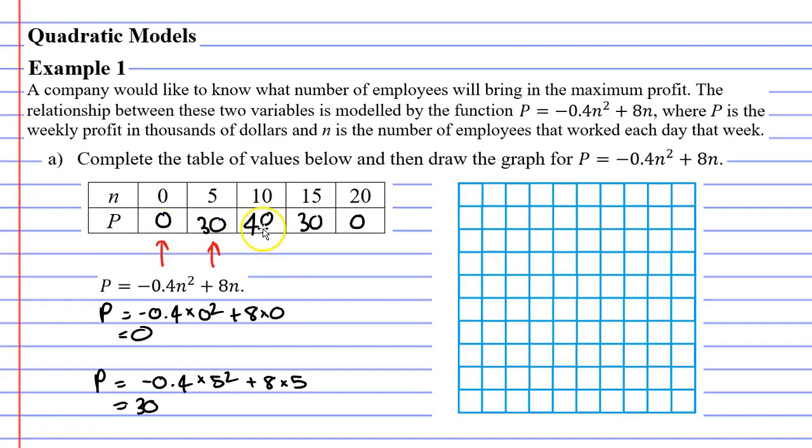All right, we've finished our table of values here and you can see that it's quite symmetrical. 0, 30, 40, 30, 0. And what we're going to do is we're going to take the top row which is n. That's going to be our horizontal axis. The top row is always your horizontal axis. So we're going to label that as n. And we need to put down the numbers from 0 through to 20.